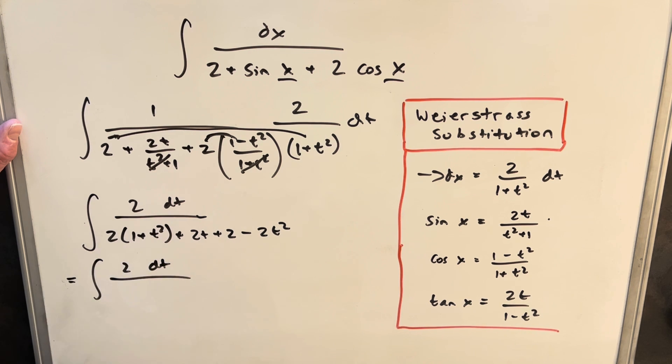Then next, let's just see if we can clean up this denominator. We'll distribute. We're going to have 2 plus 2t squared plus 2t, plus 2 minus 2t squared. Then we notice the 2t squareds cancel here. We could just cancel every 2. And then what we're left with is dt over t plus 2 in the denominator.